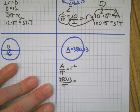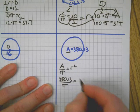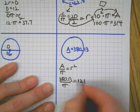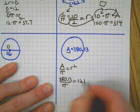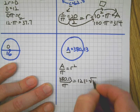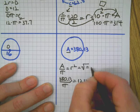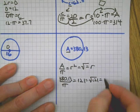380 divided by pi, 121. That's the radius squared. So I need to take the square root of 121 to get the radius, which is 11. That's radius.